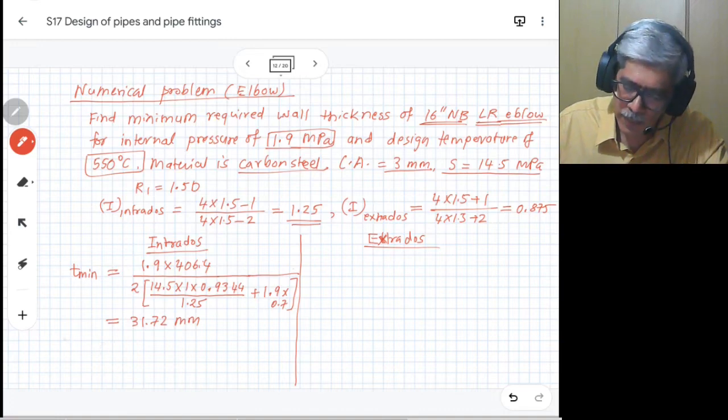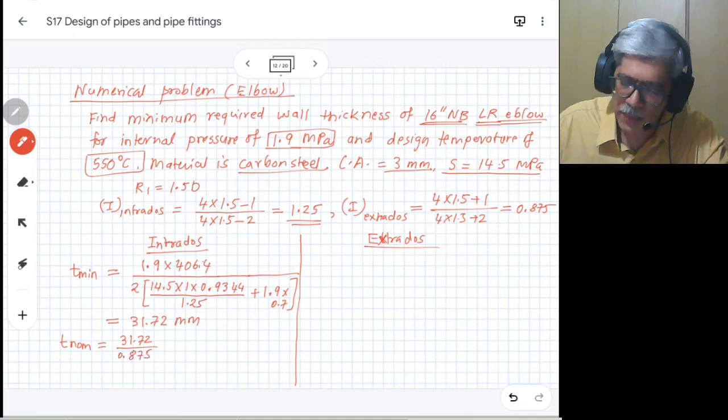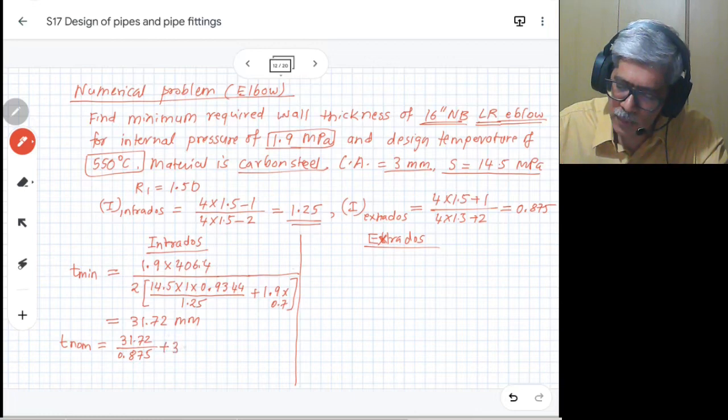Now we can calculate the nominal thickness. So t nominal will be 31.72 divided by 0.875 to account for the 12.5 percent under-tolerance, plus corrosion allowance. There is no threading allowance, so you require 39.25 as the nominal thickness of this particular pipe.